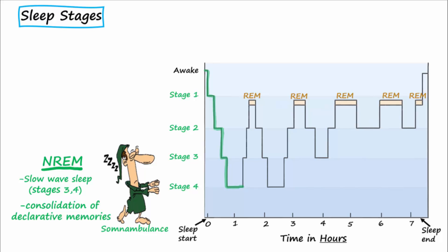Before the first REM cycle during the night, the individual goes in reverse order back through the non-REM stages. The first REM stage lasts for about 10 minutes, and the subsequent REM stages that come later in the night increase in length and may be even up to one hour in duration.